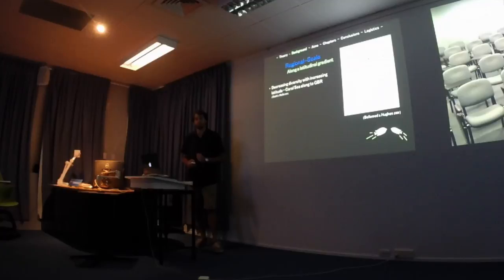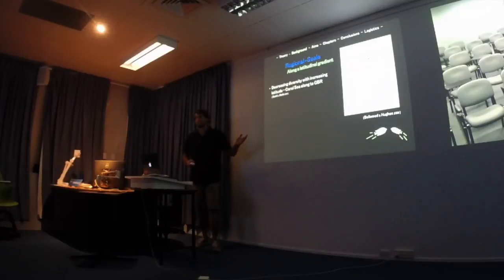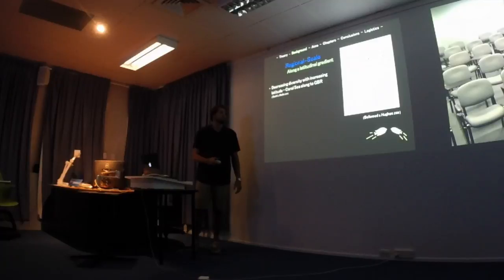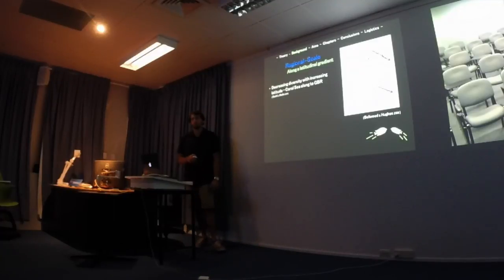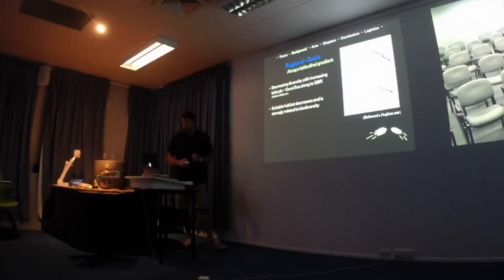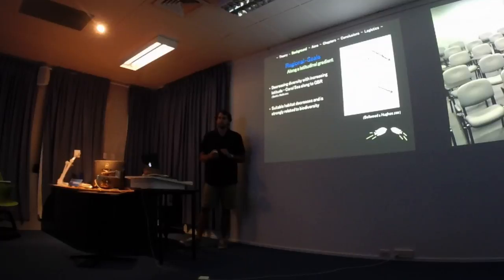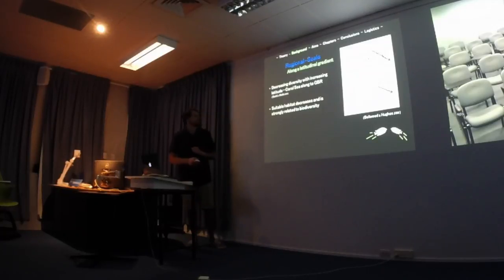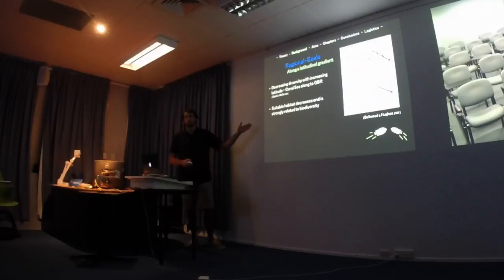At a regional scale along the latitudinal gradient, diversity decreases with increasing latitude in coral reefs. A paper by Bellwood from 2001 plotted species composition over latitude, showing decreasing species richness for both corals and fishes as you move further from the equator. One main take-home point was that decreasing suitable habitat had the strongest relationship with both of these curves — it's not just latitude itself, but factors associated with latitude.